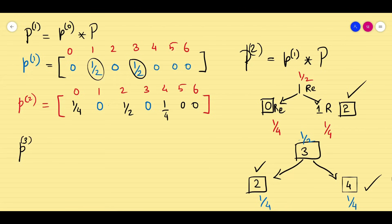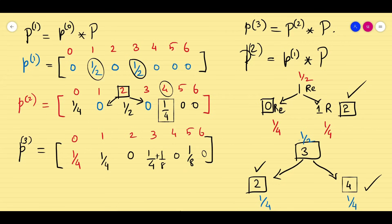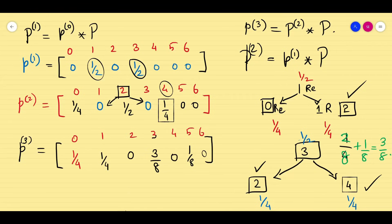Similarly when I want to go for p3, I write the formula but use logic directly. With states 0, 1, 2, 3, 4, 5, 6: the 1/4 at state 0 remains fixed. The 1/2 at state 2 splits into 1/4 (→ state 1) and 1/4 (→ state 3). The 1/4 at state 4 splits into 1/8 (→ state 3) and 1/8 (→ state 5). Combining: state 3 gets 1/4 + 1/8 = 3/8. So p3 = (1/4, 0, 1/4, 3/8, 0, 1/8, 0). I will solve p4 and p5 similarly step by step.